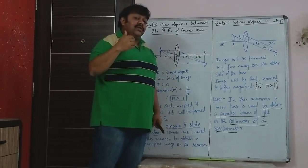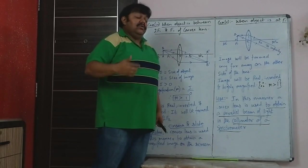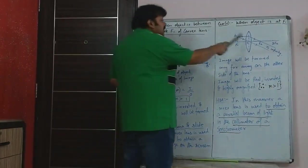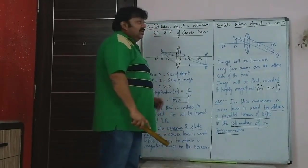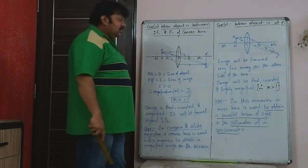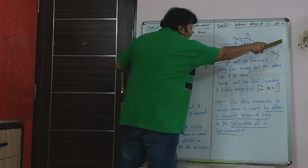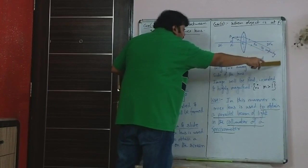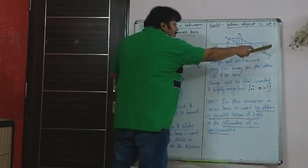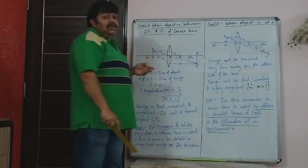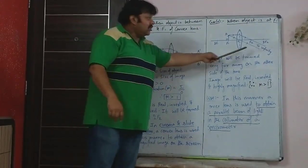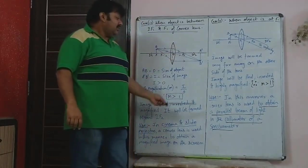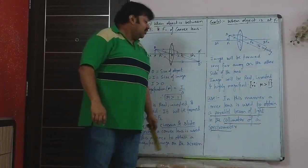When rays meet extremely far away, the image formed will be very large. So you cannot show the image A'B' on paper — you just write 'at infinity' and mark the arrows before and after refraction. A convex lens in this position is used to obtain a parallel beam of light in the collimator of a spectrometer, which is used to obtain the spectrum of visible light and the electromagnetic spectrum.